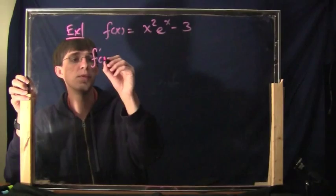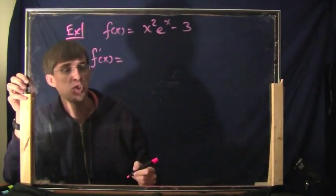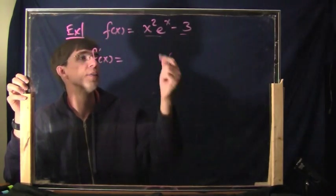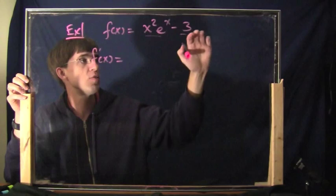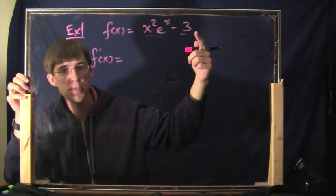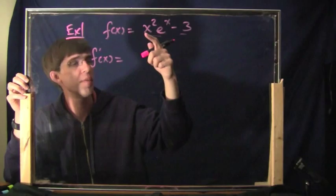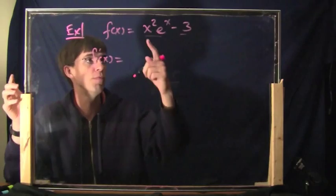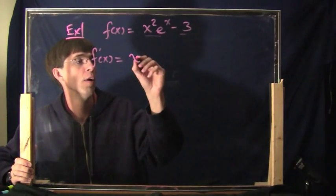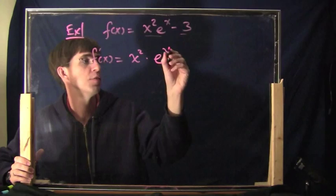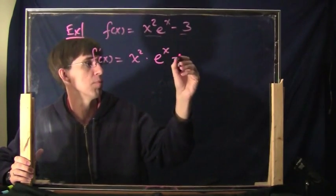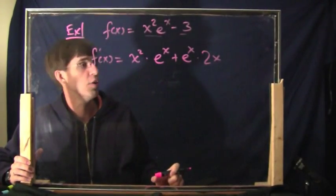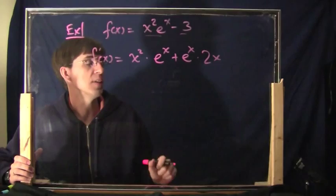So let's do it. First of all we take the derivative and simplify as much as possible. We've got x squared times e to the x, and the minus 3 is going to become zero when you take the derivative. So really all we have to care about is the derivative of x squared times e to the x, and for that you use the product rule because it's two functions multiplied together. So: the first function times the derivative of the second — the derivative of e to the x is e to the x — plus the second function e to the x times the derivative of the first, which is 2x.